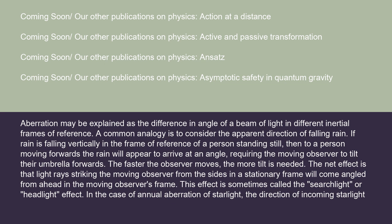Aberration may be explained as the difference in angle of a beam of light in different inertial frames of reference. A common analogy is to consider the apparent direction of falling rain. If rain is falling vertically in the frame of reference of a person standing still, then to a person moving forwards the rain will appear to arrive at an angle, requiring the moving observer to tilt their umbrella forwards. The faster the observer moves, the more tilt is needed. The net effect is that light rays striking the moving observer from the sides in a stationary frame will come angled from ahead in the moving observer's frame.